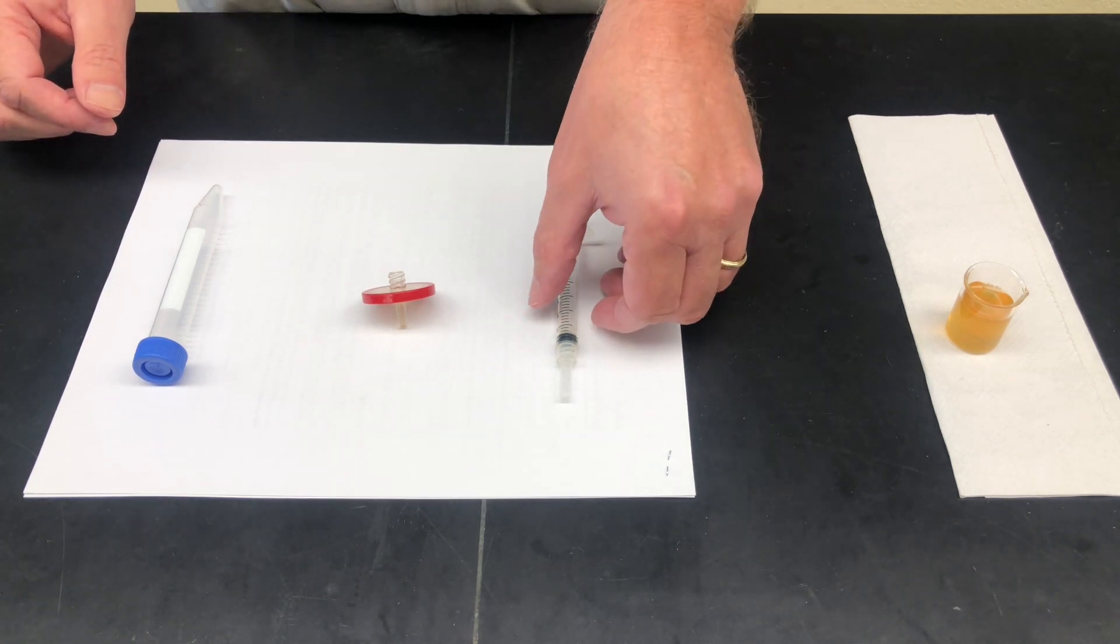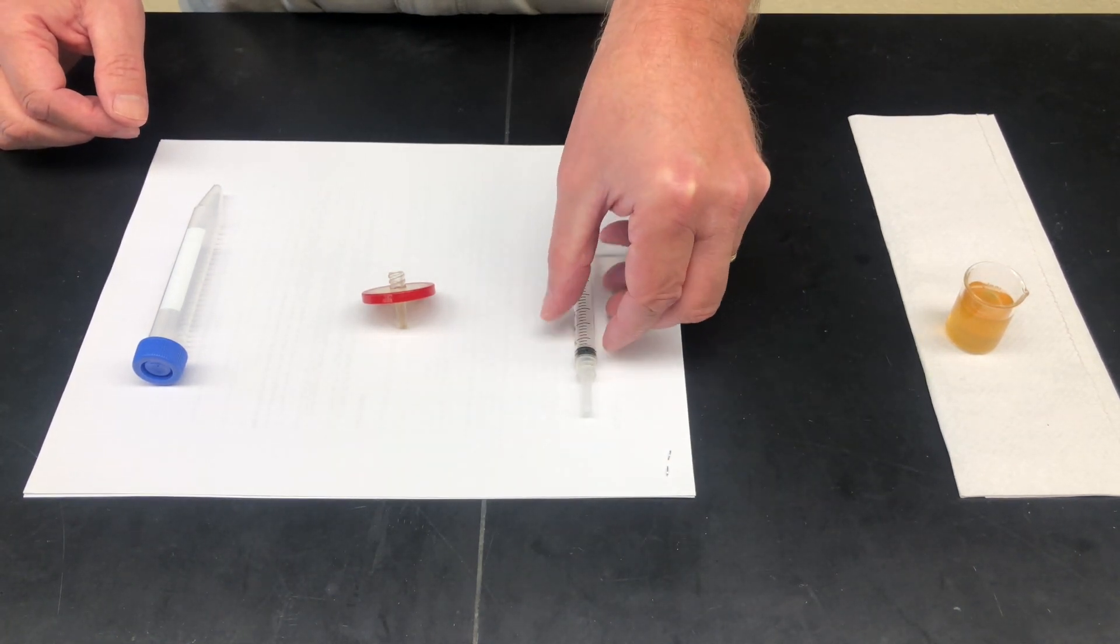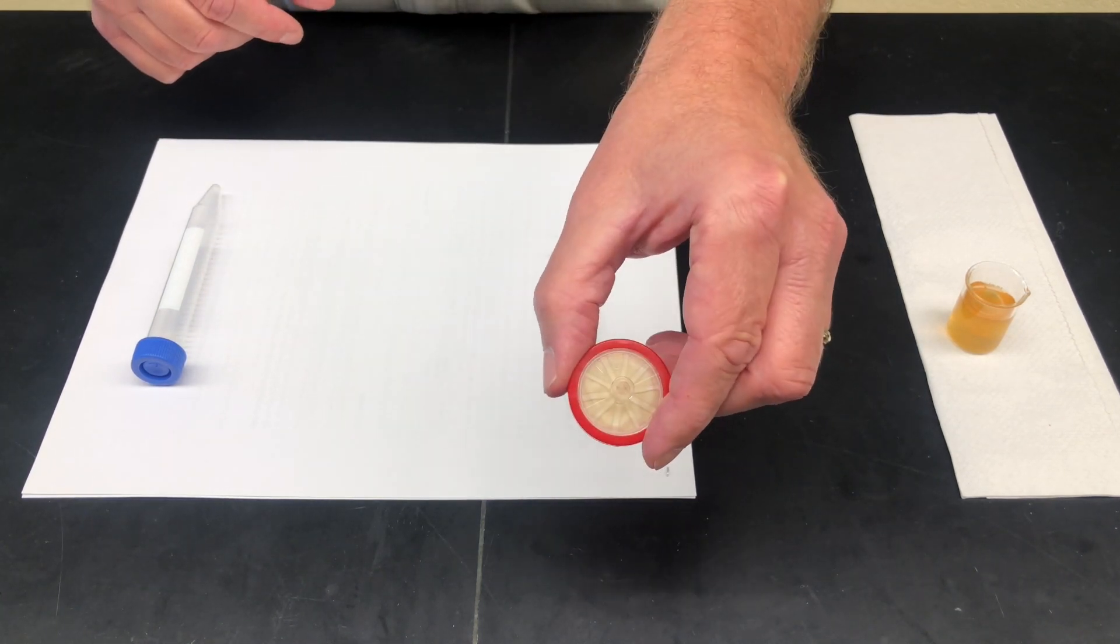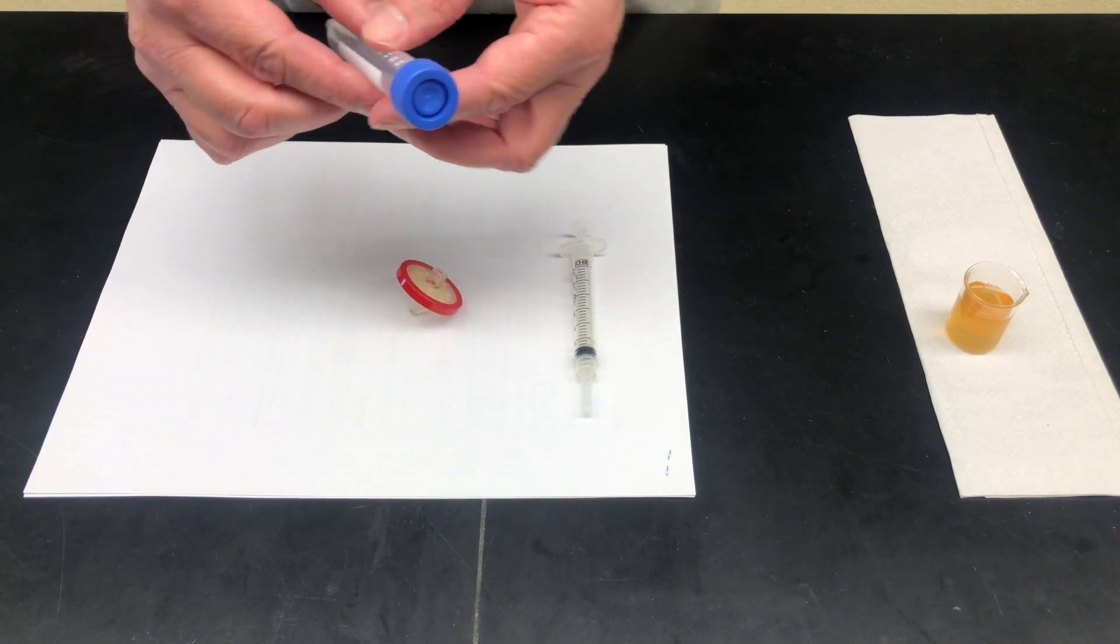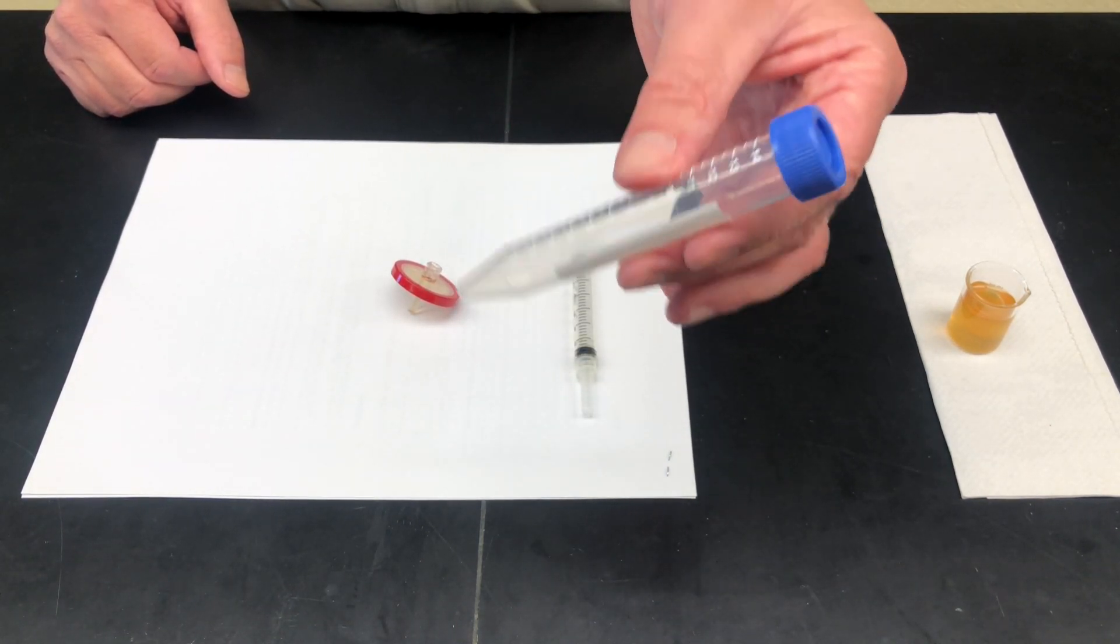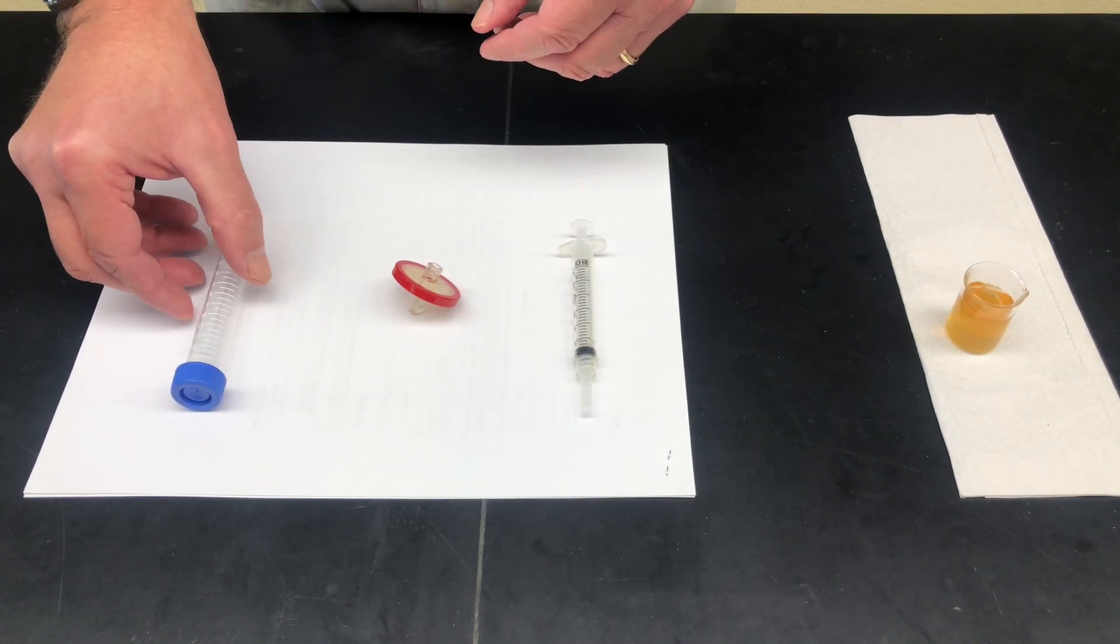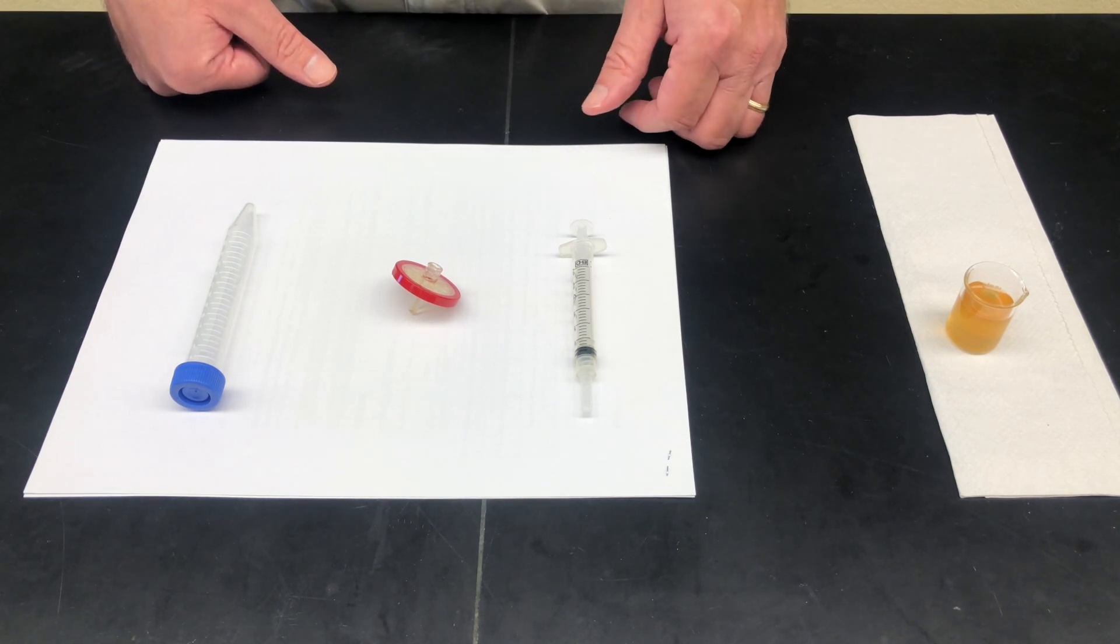The first item you would have is the syringe. The second item present in the kit is the actual filter, which looks like this. And then finally, we have a conical tube for reception of your sample. Your sample would be shipped to us in this tube. So now I'd like to show you how you would actually prepare a sample for us.